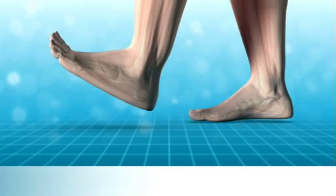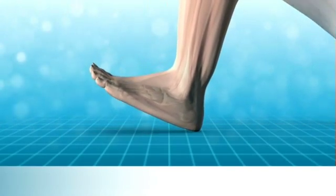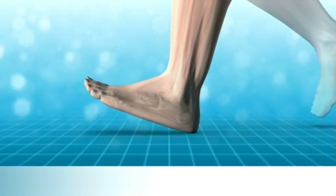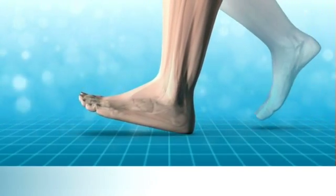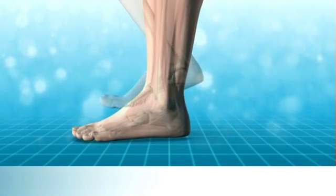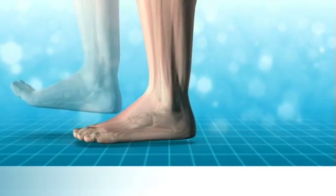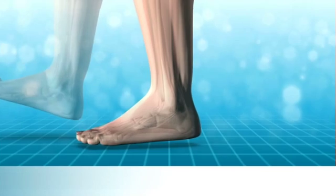The stance phase of gait can be broken into three main sections. Firstly, there's the contact phase where your heel strikes the ground, generally on the outer side of your heel. Then your foot quickly moves into the mid-stance of gait, when your foot becomes flat on the ground.